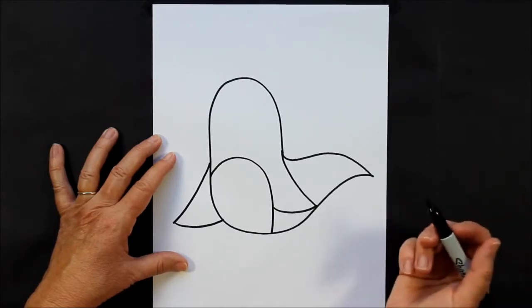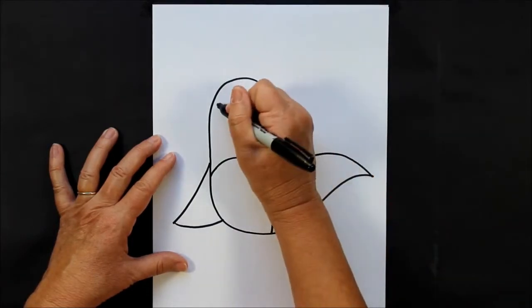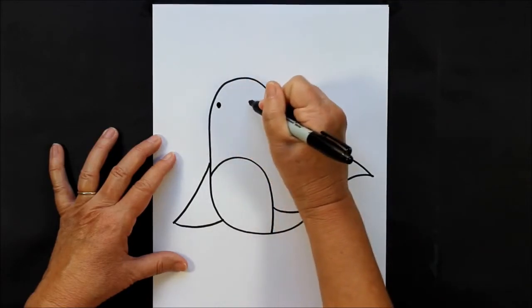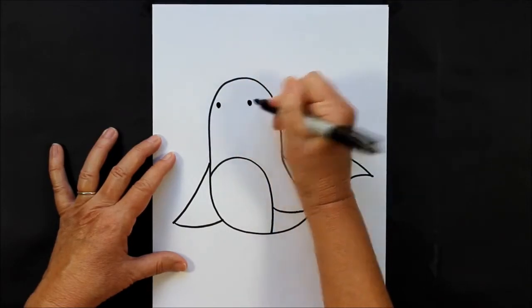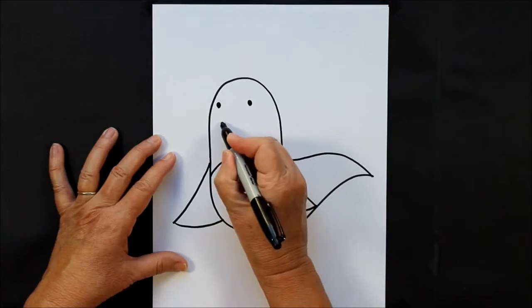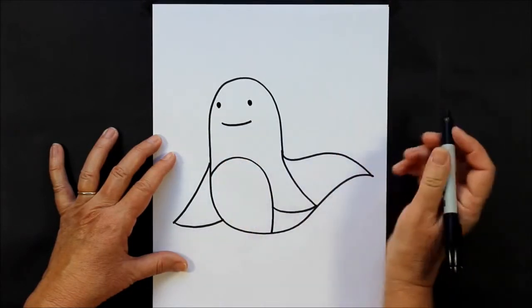Now for his face, we are going to make some eyes, some wide set eyes, and a mouth with some tusks coming out.